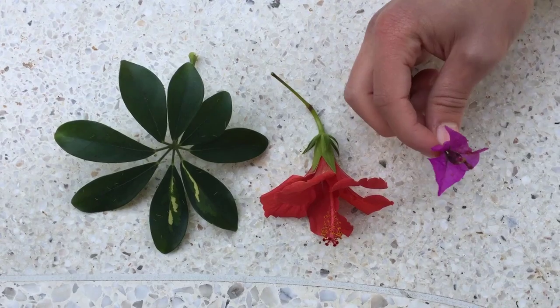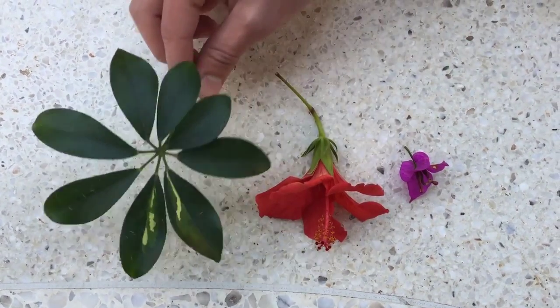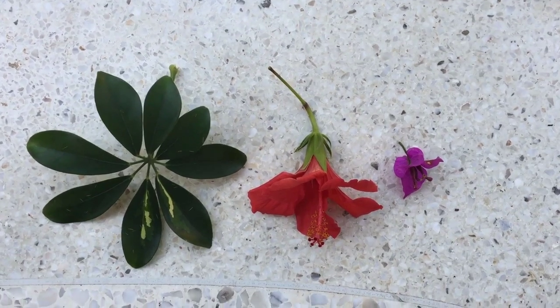Have a look at this one which has 3 petals, and this one has 5, and this one has 8, and these are all exact consecutive numbers of the Fibonacci sequence.